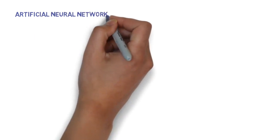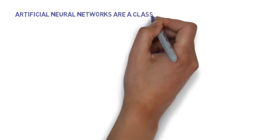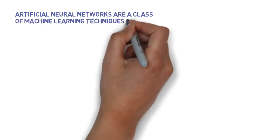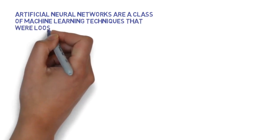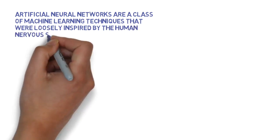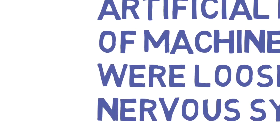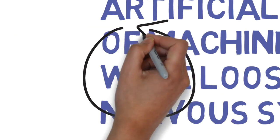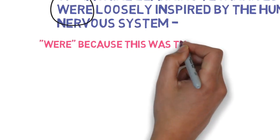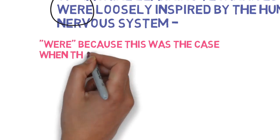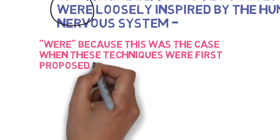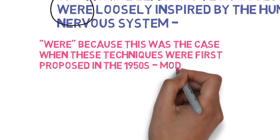Artificial neural networks are a set of techniques that were loosely inspired by the human nervous system. We say were because in the 1950s, when these techniques were first proposed, that's what the inspiration was. But today, these techniques look very much like the other statistical techniques that we have covered.